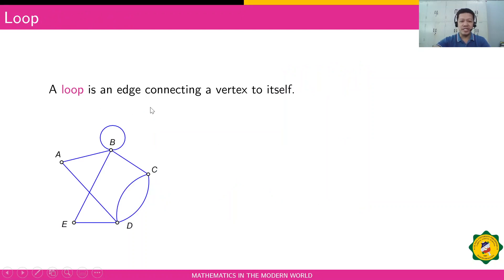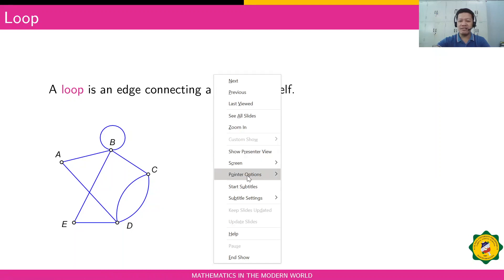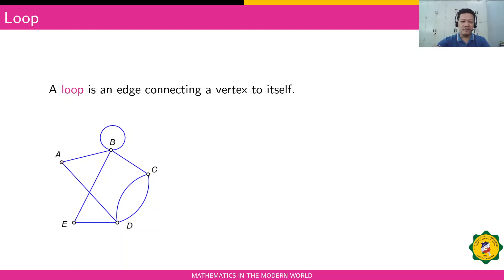Another term is a loop. A loop is an edge connecting a vertex to itself. In this graph, there's a loop in vertex B. If you want to have other loops, we can actually draw. We can have a loop here for vertex A. You can also have a loop here for vertex E if you want, or any other vertices.